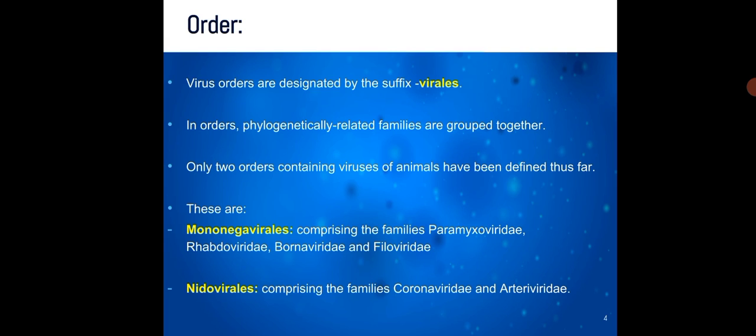Order: Virus orders are designated by the suffix -virales. In orders, phylogenetically related families are grouped together. Only two orders containing viruses of animals have been identified thus far. These are Mononegavirales, comprising the families Paramyxoviridae, Rhabdoviridae, Bornaviridae, and Filoviridae; and Nidovirales, comprising the families Coronaviridae and Arteriviridae.